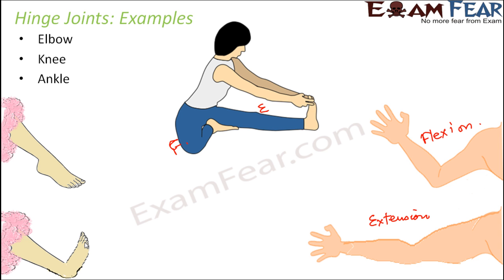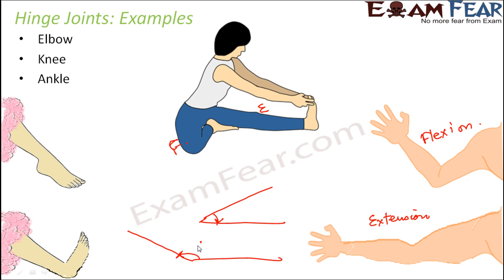Whichever part of your body you feel you can move only back and forth and cannot rotate at all — those are all examples of hinge joints. In hinge joints, the two bones are connected such that either the bones come near each other, decreasing the angle between them, or the bones move away from each other. When they move away we call it extension, and when they come towards each other we call it flexion. One very good example is the joints between the bones of fingers or toes — you can flex to decrease the angle, but you cannot rotate your fingers. That limited movement is also an example of a hinge joint.